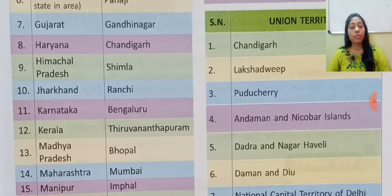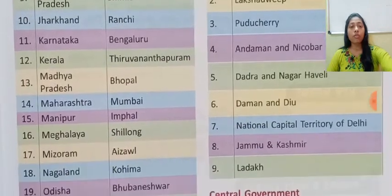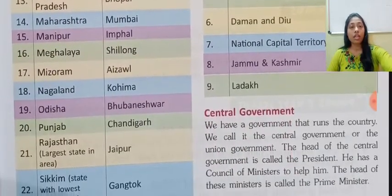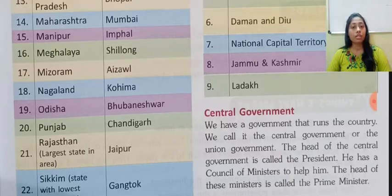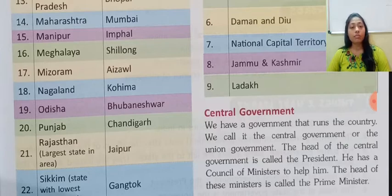Number 13: Madhya Pradesh — capital is Bhopal. Number 14: Maharashtra — capital is Mumbai. Number 15: Manipur — capital is Imphal. Number 16: Meghalaya — capital is Shillong. Number 17: Mizoram — capital is Aizawl. Number 18: Nagaland — capital is Kohima. Number 19: Orissa — capital is Bhuvaneshwar. Number 20: Punjab — capital is Chandigarh.